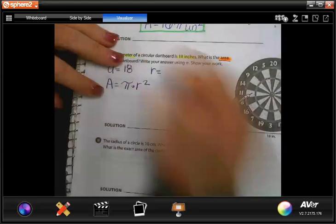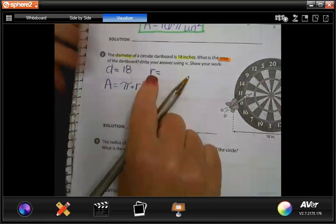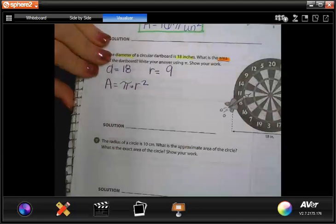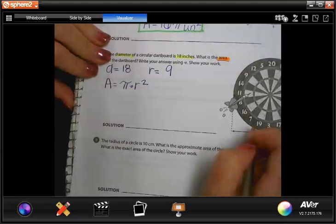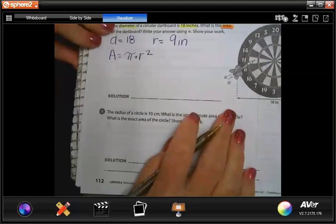So if you guys remember, cross my fingers, from the last couple of days, radius is half of the diameter. So half of 18 is nine. And this is labeled in inches. So let's plug it in.